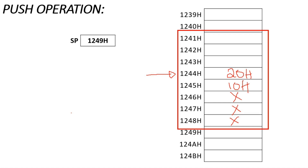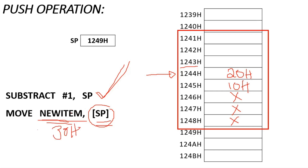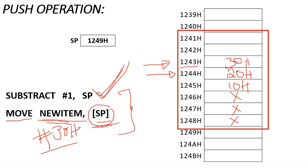In assembly language, the push operation is written as two lines: first subtract SP by 1 to decrement it, then MOV #30H, [SP] to store the new value at the address pointed to by SP. Together these two instructions constitute the push operation. SP is decremented first, then the data is stored at the new top location.